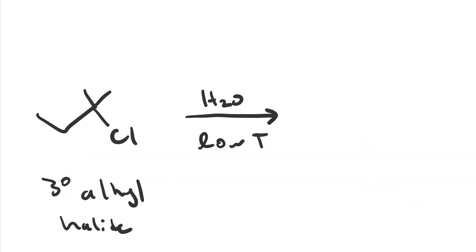If we have a tertiary alkyl halide, it can't go SN2 because the substrate is too sterically crowded. But if we use a weak nucleophile like water at a low temperature to favor substitution, we can get some SN1 product, which would be a tertiary alcohol.